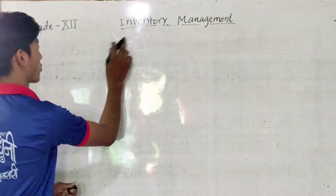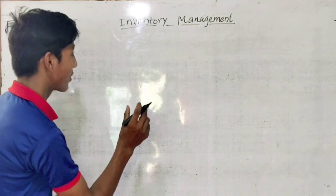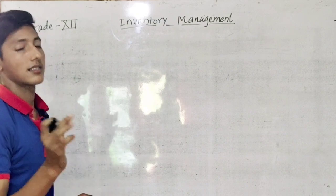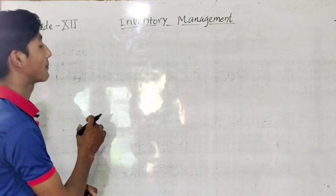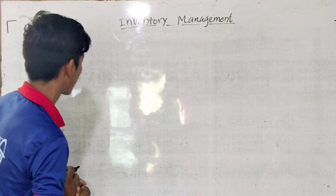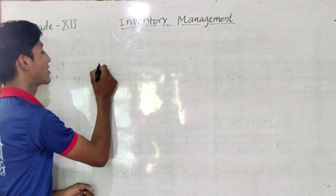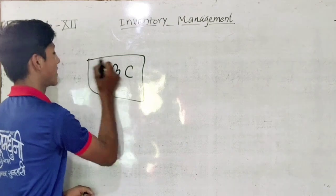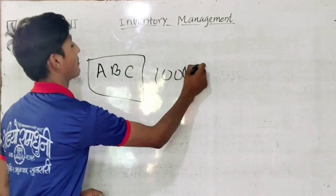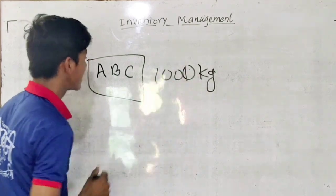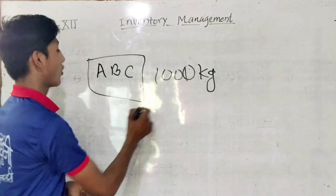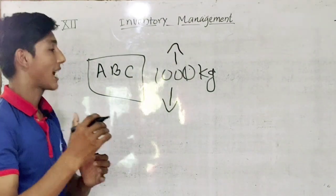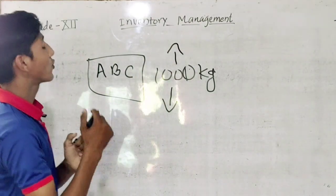We are going to talk about the chart format. Inventory management — economic order quantity. ABC company: maximum, minimum, and average stock levels are key concepts. We consider the company's price and units for the average of the company.